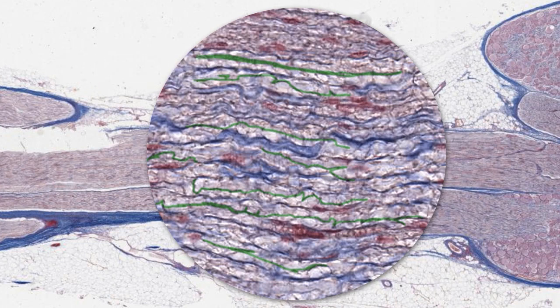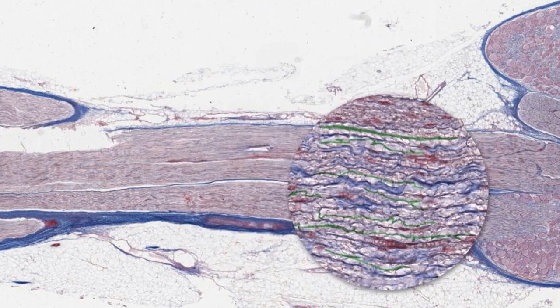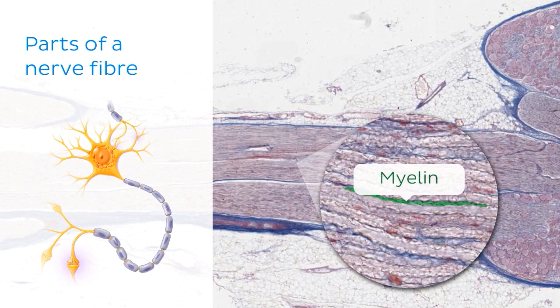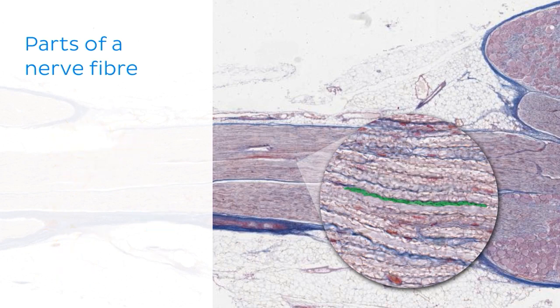There are unmyelinated axons in the body, but the fastest conducting and the most efficient nerve fibres are those which are myelinated. So let's talk a little bit about what myelin is. Myelin is a fatty membranous tissue which encapsulates the nerve fibre. As fatty tissue does not take up any colour from Laidwig's stain, it appears white on our slide.